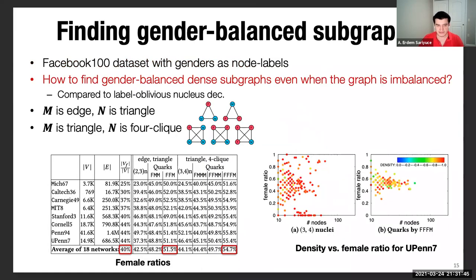The last experiment is very interesting. Here we used Facebook 100 dataset, where genders serve as node labels, only female and male were available as the genders. Our aim was how to find gender-balanced dense subgraphs, even when the graph itself is imbalanced. Here we compared our method with respect to label oblivious nucleus decomposition method, and we tried out two cases, the small motif M is edge and the N is triangle, and also M is triangle and N is four-clique.